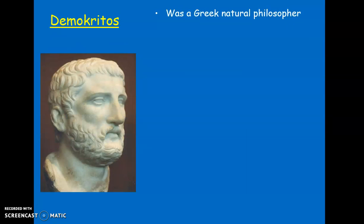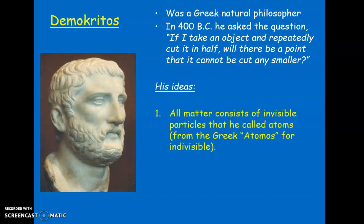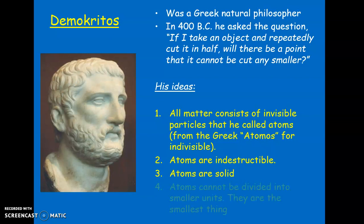Starting at the beginning: Democritus was an ancient Greek philosopher, and we're talking 400 BC. He thought: if I get an object and I repeatedly keep cutting it in half, over and over again, will there be a point where I cannot cut anything any smaller? His idea was yes — the smallest point would be called an atom. They're invisible, they're indestructible, they can't be cut anymore. The atom is the smallest thing possible, and all atoms are solid. His idea stood for a few thousand years.